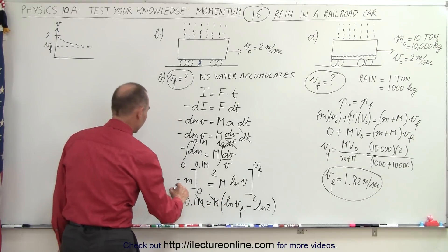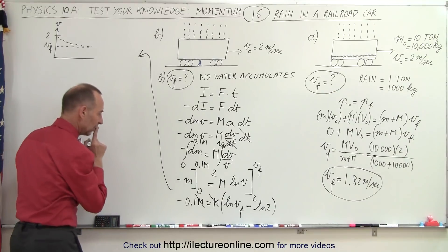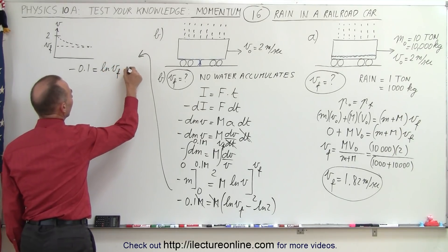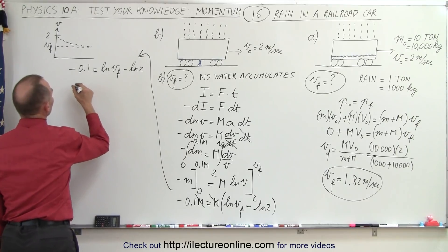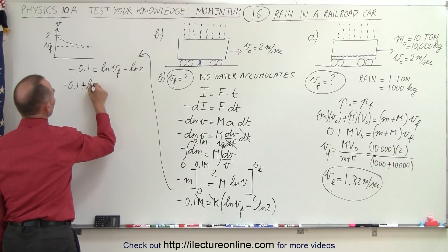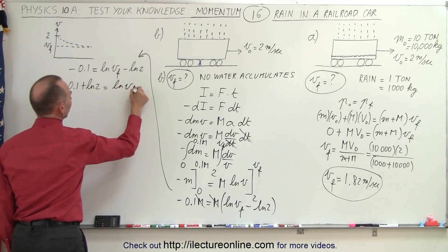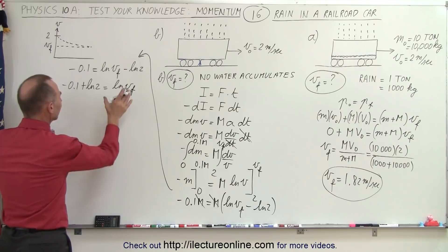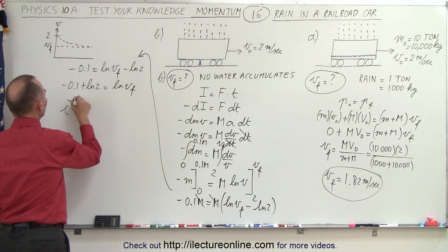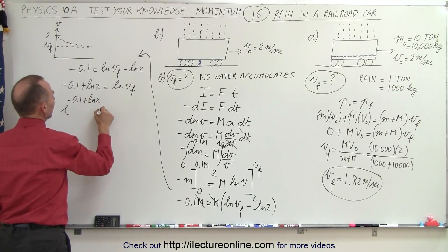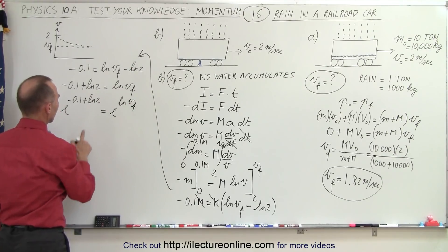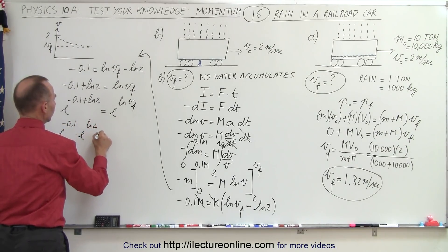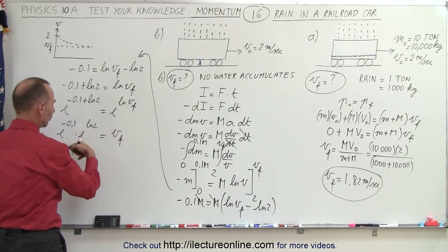We can cancel M from both sides, leaving: minus 0.1 equals ln(v_final) minus ln(2). Rearranging: minus 0.1 plus ln(2) equals ln(v_final). Taking antilogs of both sides: e^(−0.1 + ln 2) equals v_final. This splits as e^(−0.1) times e^(ln 2), and since e^(ln 2) equals 2, we get v_final equals 2 times e^(−0.1).